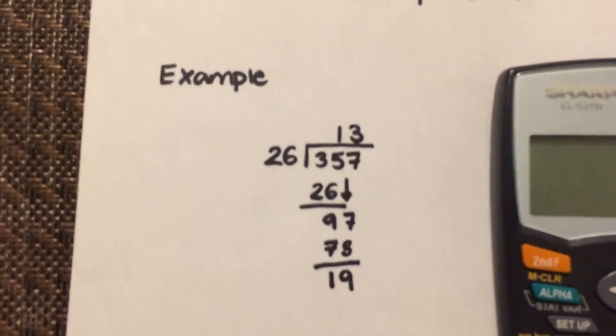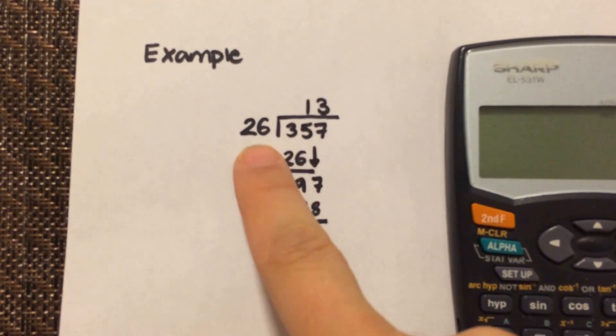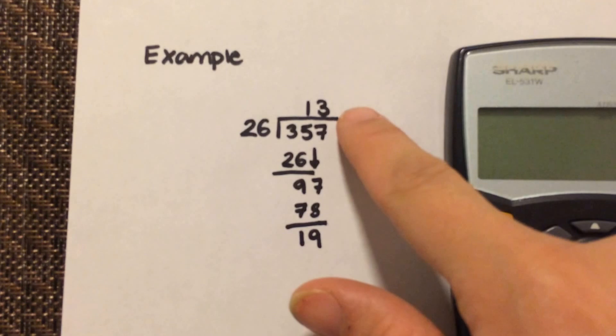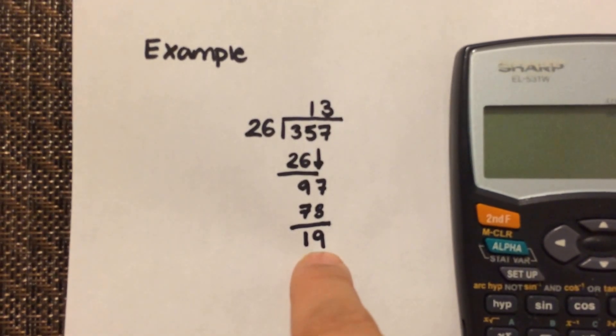For example, when you do long division and you divide 357 by 26, you get the answer is 13 with a remainder of 19.